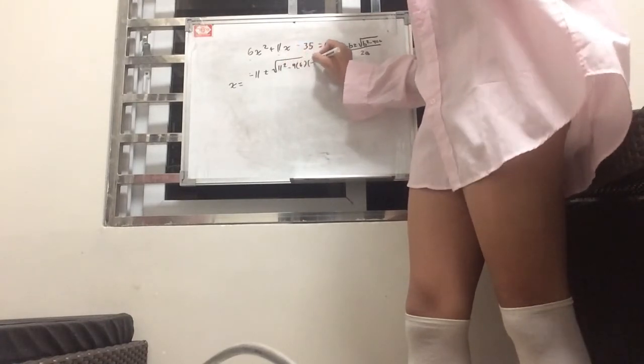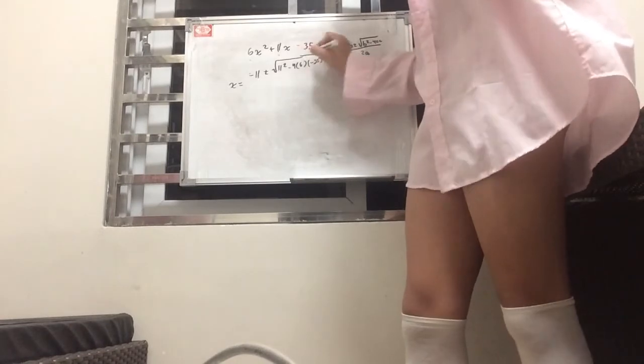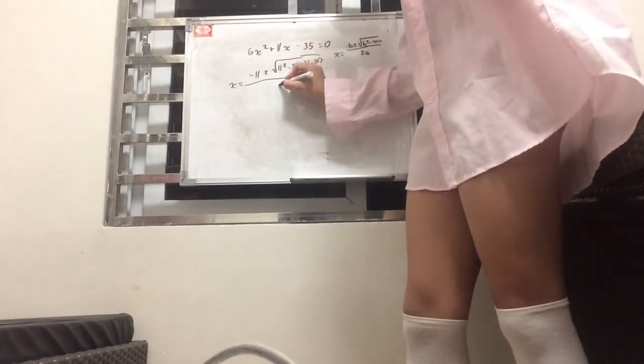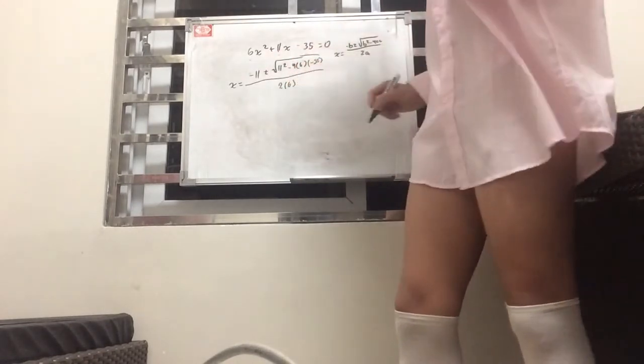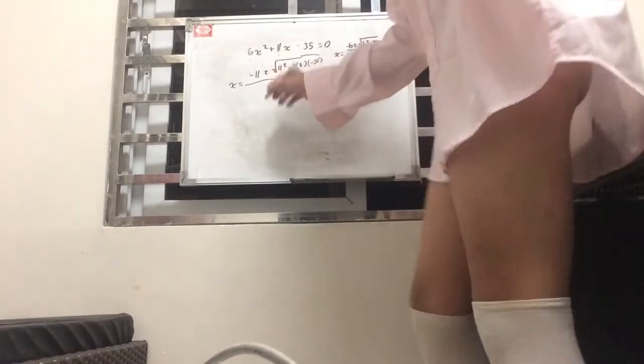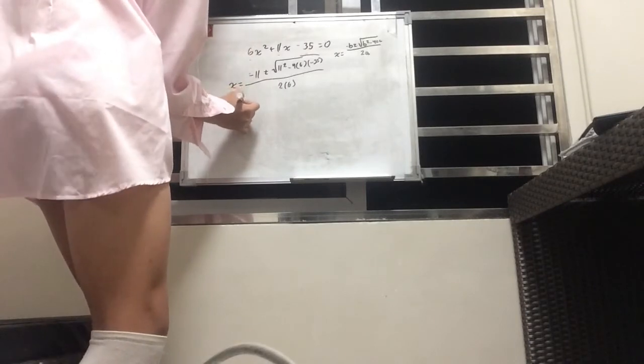So, 6 is a, and 11 is b. So, x would be equal to negative 11 plus minus square root of 11 squared minus 4 times 6 times negative 35 all over 2 times 6, which is 12.